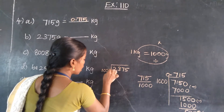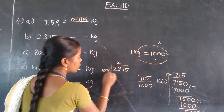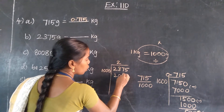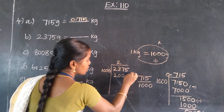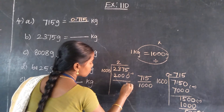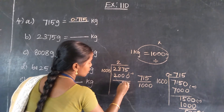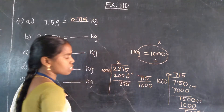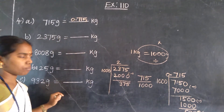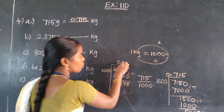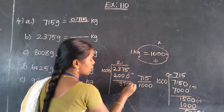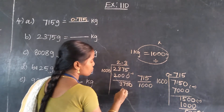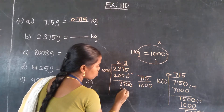How many times? 2 times. 2 into 1000 is 2000. So less than the number. Then this remainder is 375. So 375 divided by — in a row, point opening, zero joined one row. It is 3 times possible. 3000.